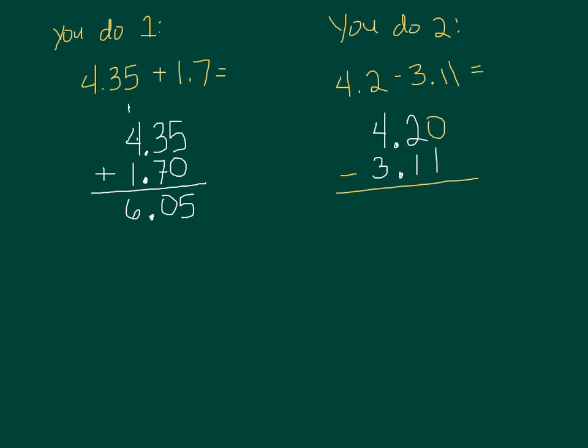So now in that hundredths place, the pennies place, I've got zero pennies. I need to take one away from that. Well I don't have any to take away from that so I'm going to go borrow just like I did before. Take that dime and break it into ten pennies. Ten take away one is nine. One dime take away one dime is zero. Four dollars take away three dollars is one. One dollar and nine cents should have been the correct answer that you got.